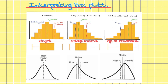For left skewed or negatively skewed data, the box is towards the right-hand side of the data. This means that the left-hand whisker is longer than the right-hand whisker, and the median point is towards the right-hand side of the box.